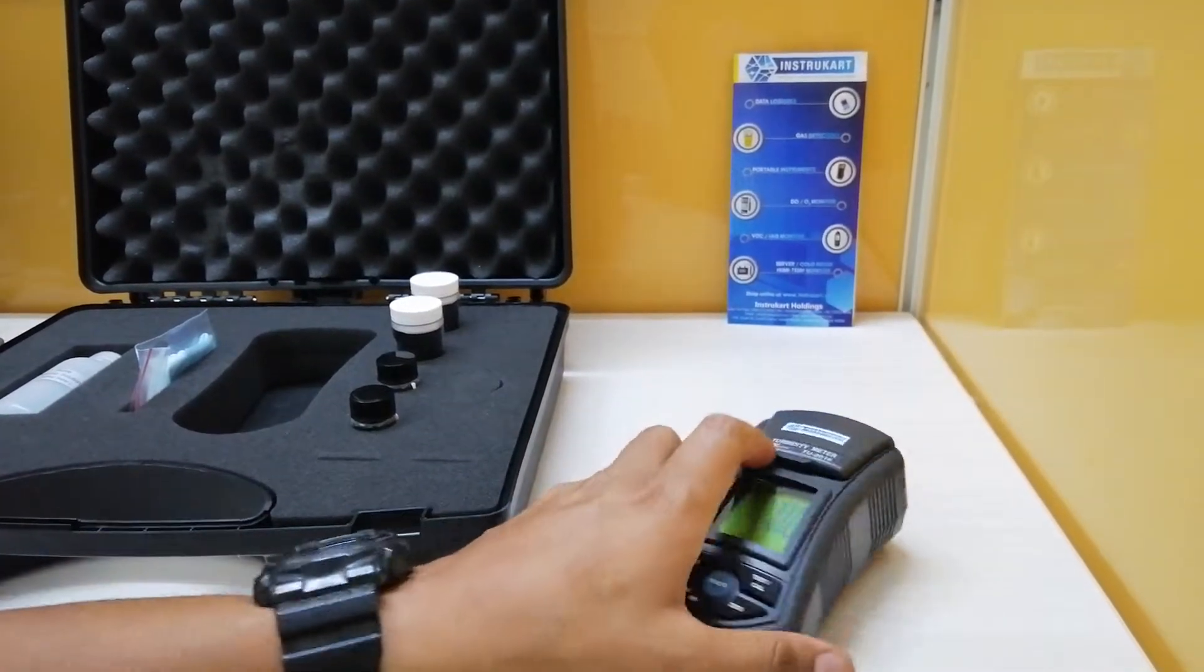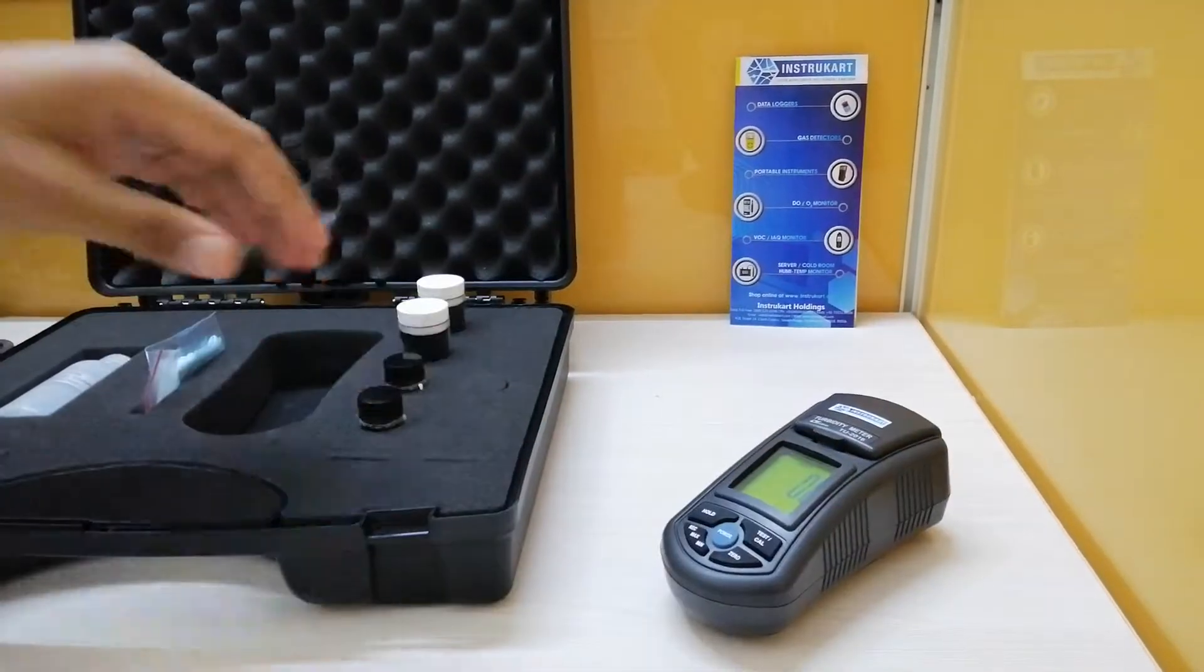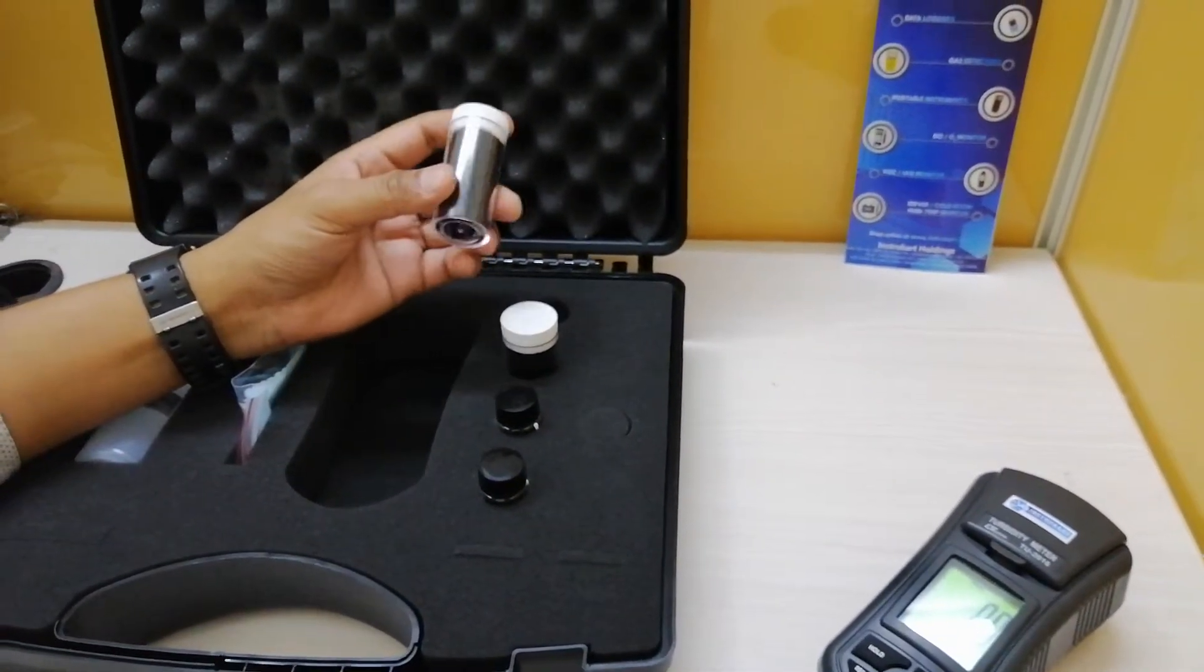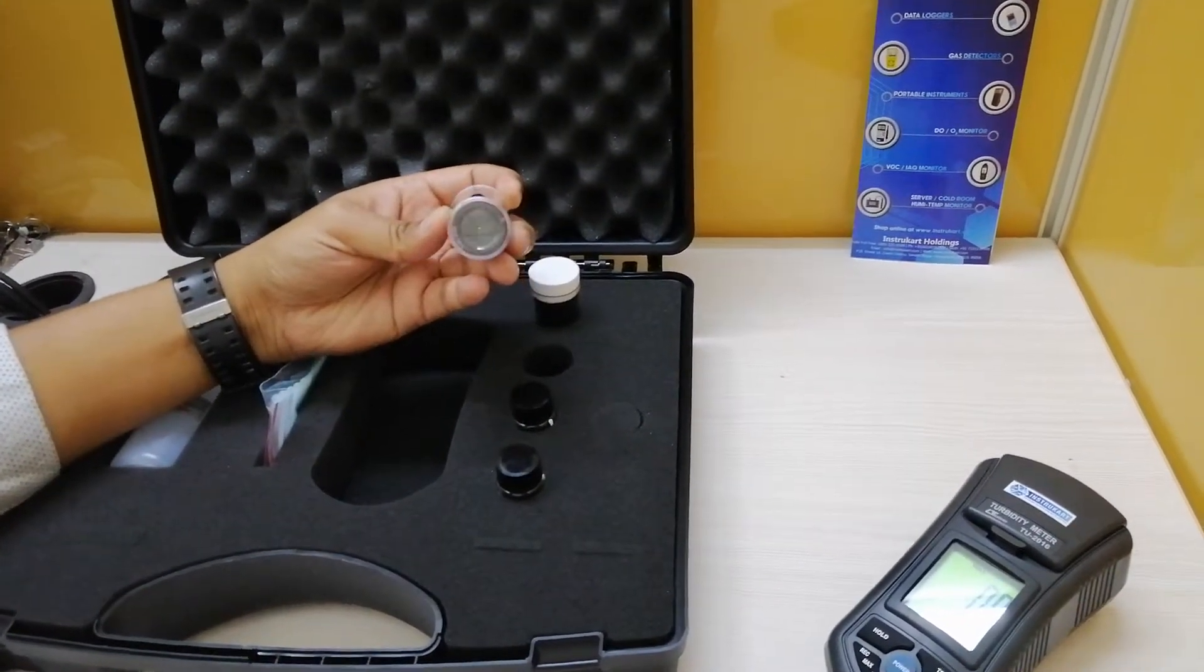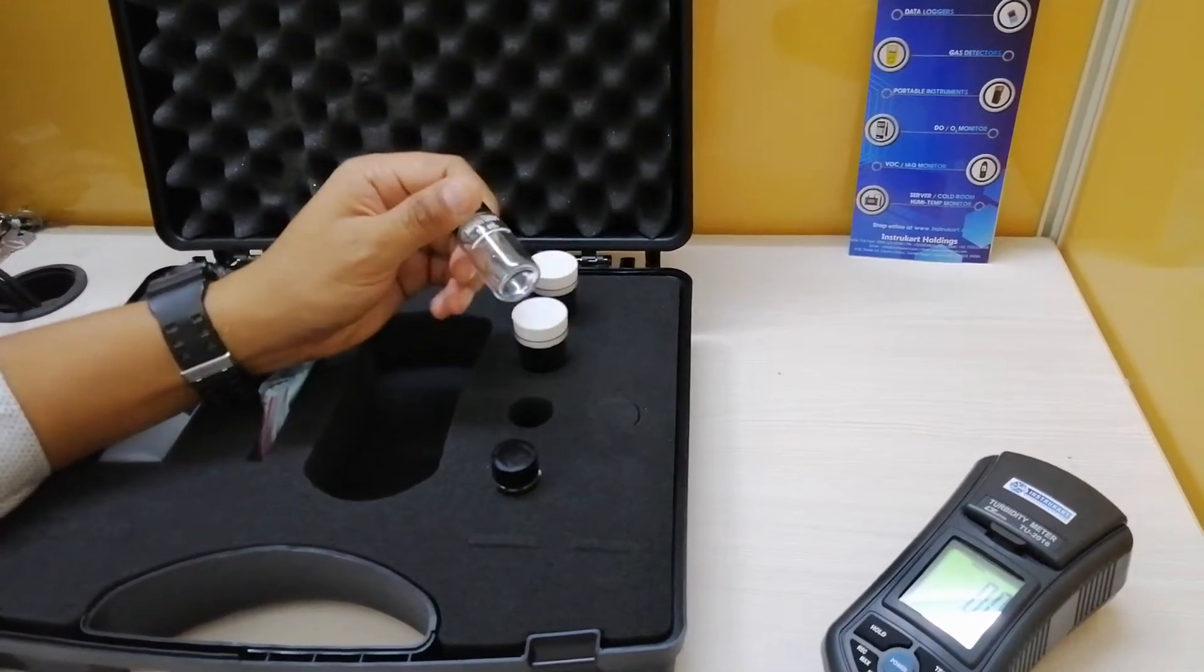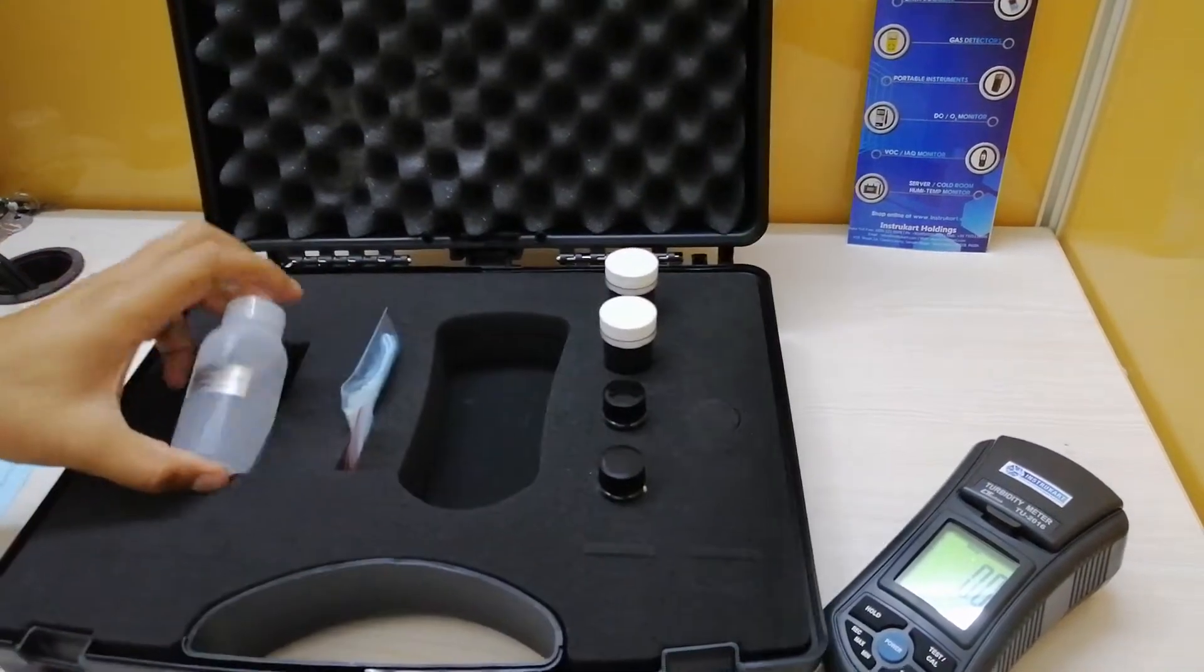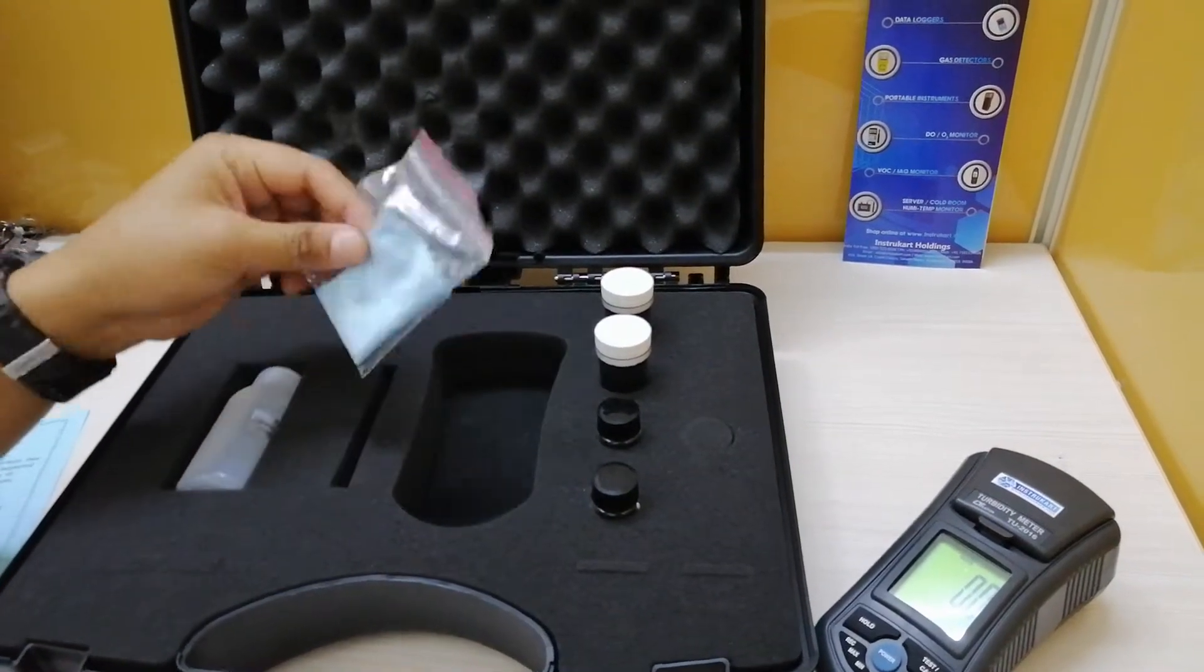The accessories which will be included with this particular thing is the instrument. This is the testing bottle with 0 NTU standard solution. Testing bottle with 100 NTU standard solution. This is the empty testing bottle, 10 ml. Another empty testing bottle. This is the cleaning solution, the distilled water, and the cleaning cloth.